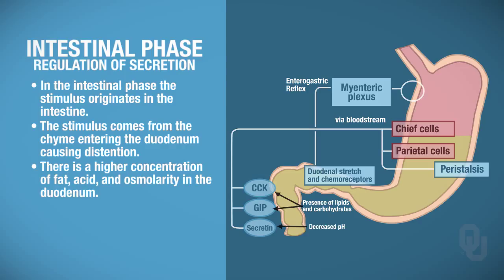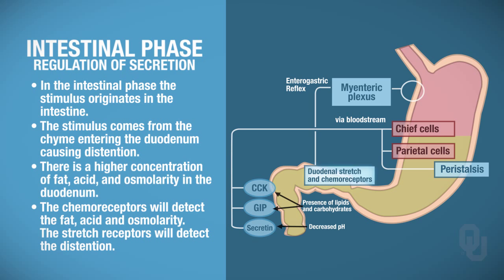The increased concentration of fat, the increased concentration of acid, and the increased osmolarity are all going to be detected by the chemoreceptors. And the distention is going to be detected by the stretch receptors, which are your mechanoreceptors.